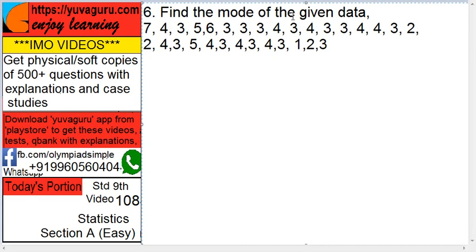Find the mode of the given data. Mode means what appears the maximum number of times. By looking here, you can definitely find which value is appearing the maximum number of times — 3 is appearing the maximum. If you count it, it is appearing 13 times over here. That's why the mode is 3.